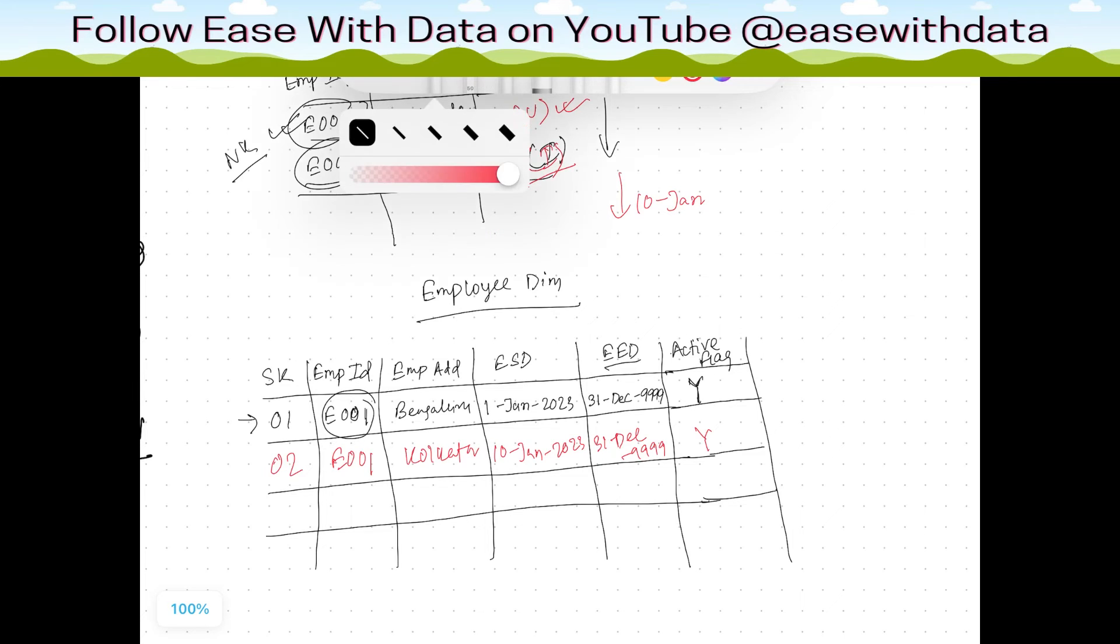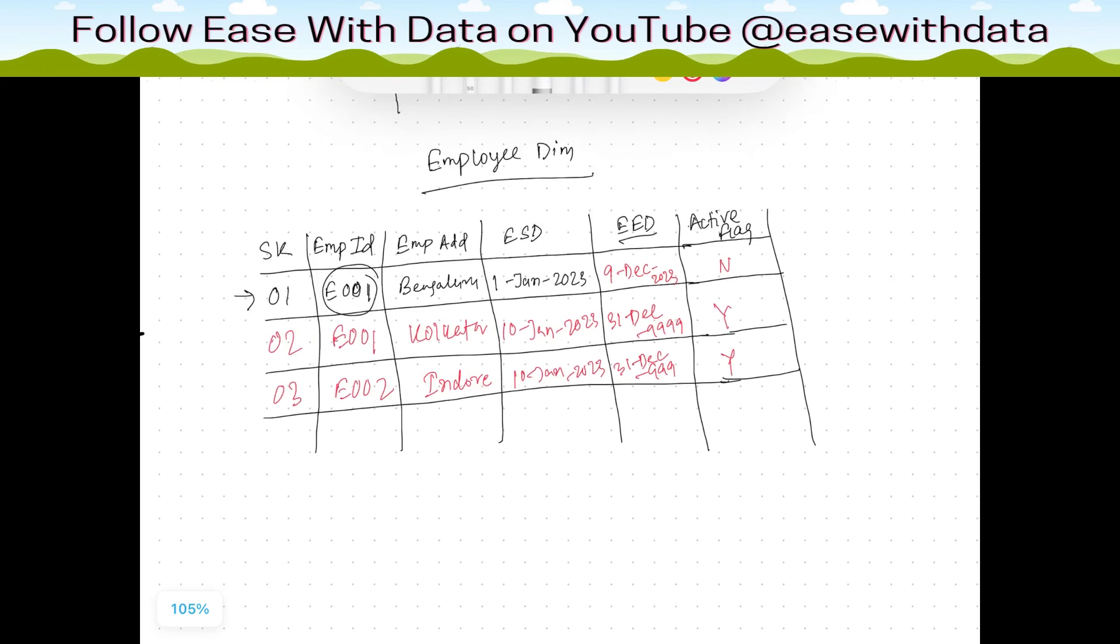There is one update that will happen. We'll change this date and this effective flag to no. We will change on the day of 10th Jan, this will become, since the change happened on 10th Jan, this record expired on 9th Jan 2023 and the active flag becomes N. The second record for which we don't have any change, that will get inserted. So it will become E002, this is Indore, again same 10th Jan 2023 and high date 31st December 9999 and this is Y. Now this is how the historical records are maintained.